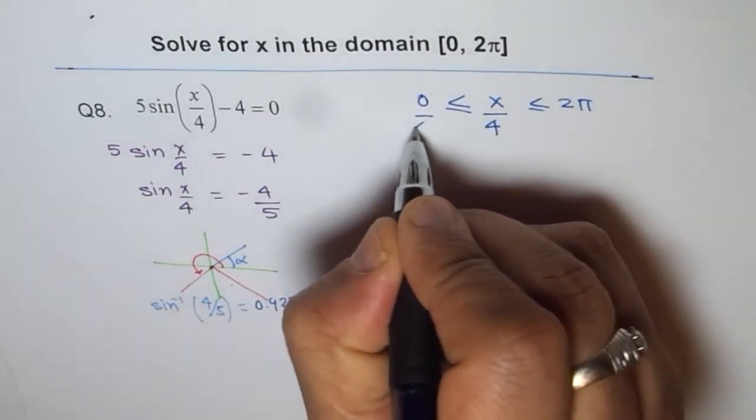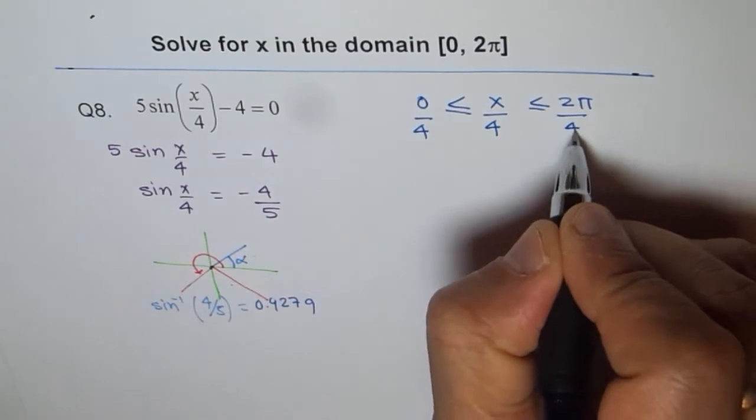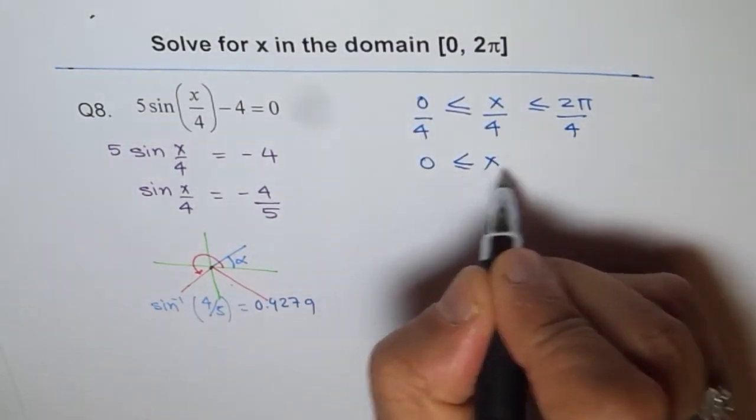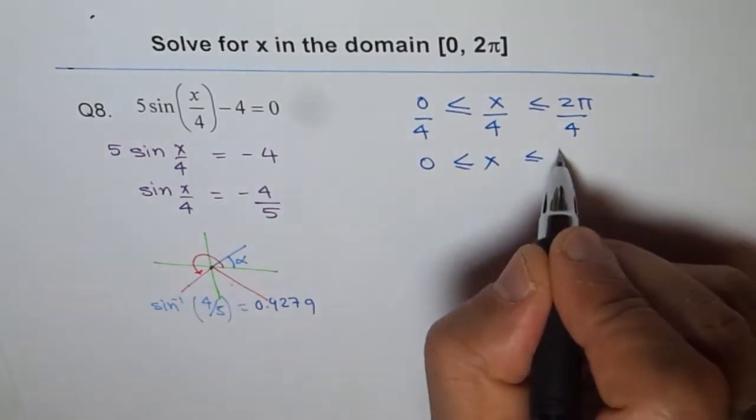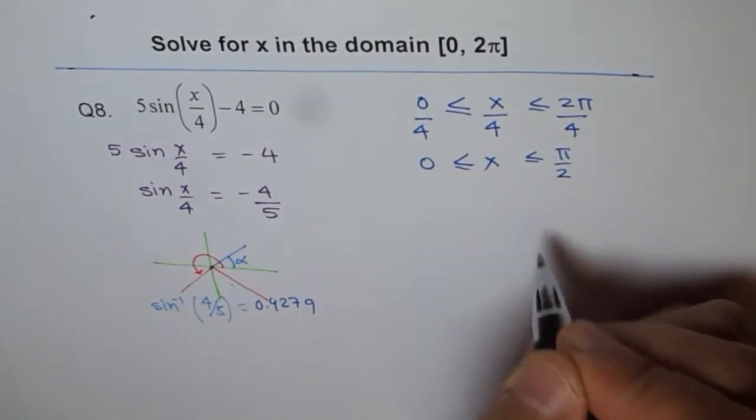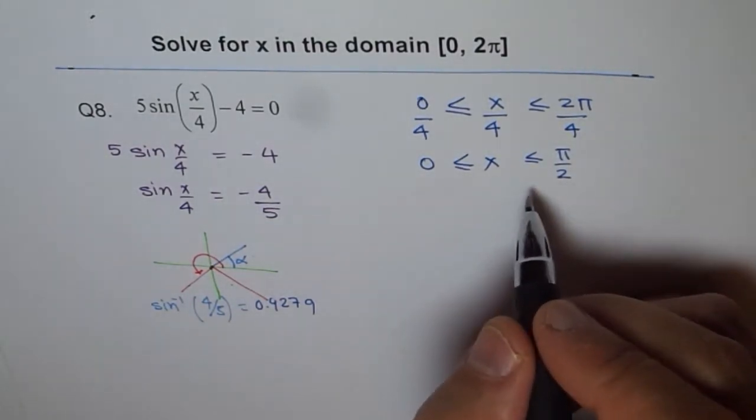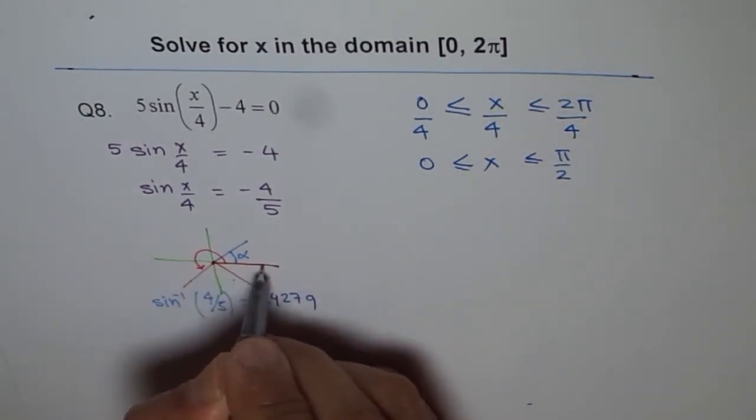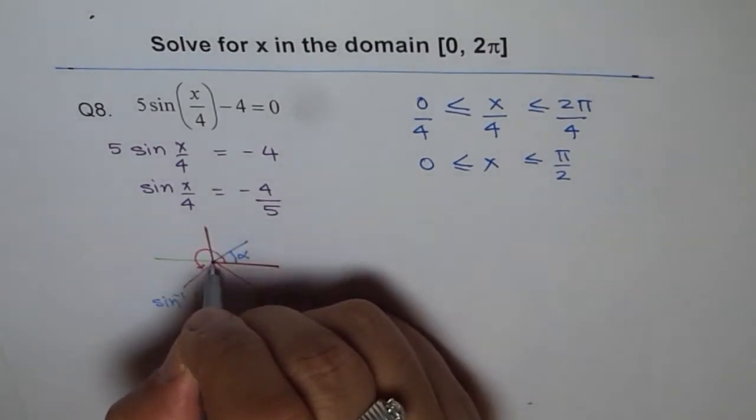So let's divide everything by 4. In that case, it becomes x is greater than or equal to 0 but less than or equal to π/2. So that means our domain gets restricted between 0 and π/2.